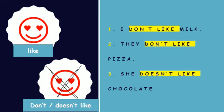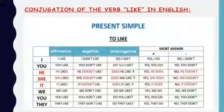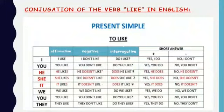Now let's look at the full conjugation of the verb 'like' in present simple. The personal pronouns are: I, you, he, she, it, we, you, they. In the affirmative form: I like, you like, he likes, she likes, it likes, we like, you like, they like. Notice that for he, she, and it, we add an 's'. This is how we conjugate verbs in present simple in English — add 's' for the third person singular.